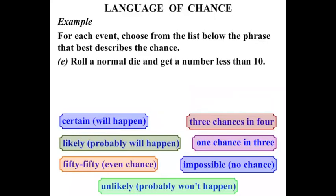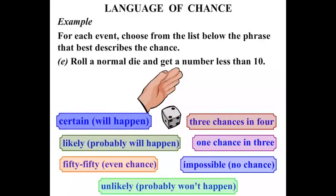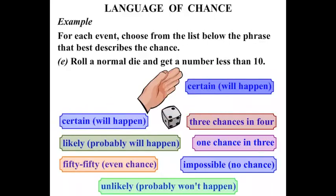What about if we roll a normal die and get a number less than 10? Well on a normal die the numbers are one, two, three, four, five, and six. So the chance that you will get a number less than 10, well that's certain. It definitely will happen.